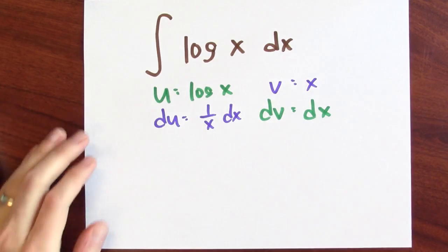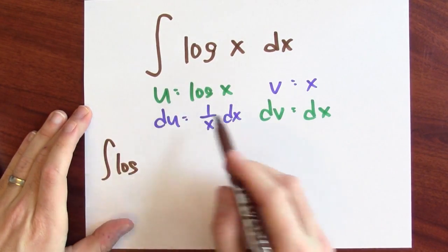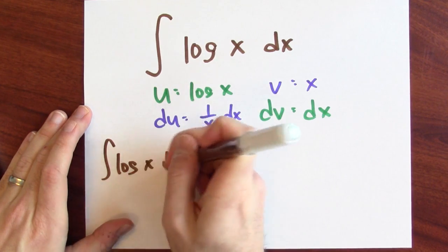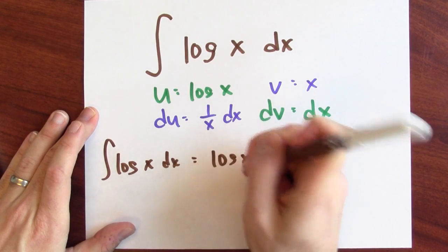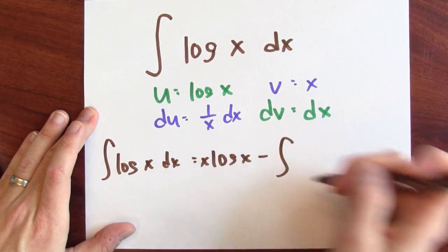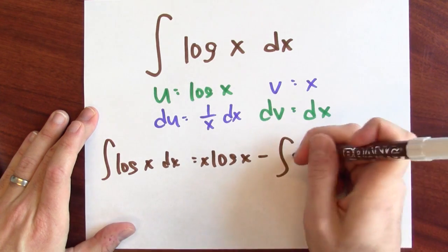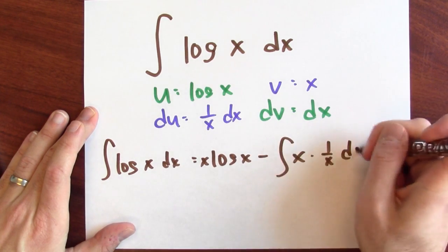Now, what does parts tell us? By parts, the integral of u dv, so log x dx, that's what I'm interested in, is uv, so x log x, minus the integral of v du, which is x times du.